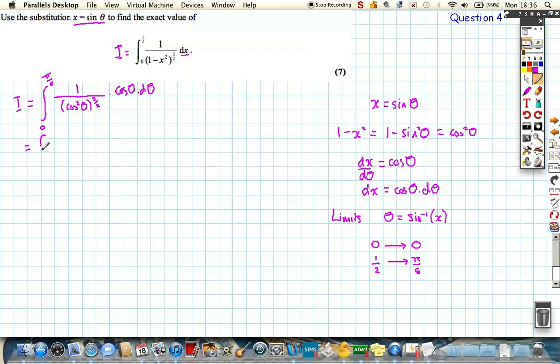So, let's write it again. We've got the integration running from 0 to pi over 6. Well, cos squared theta, the denominator, cos squared theta, the square root of that is just cos theta.